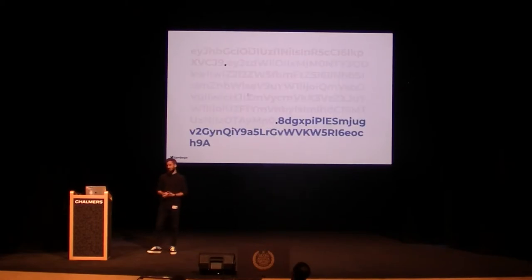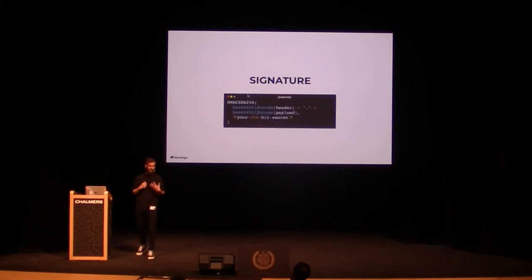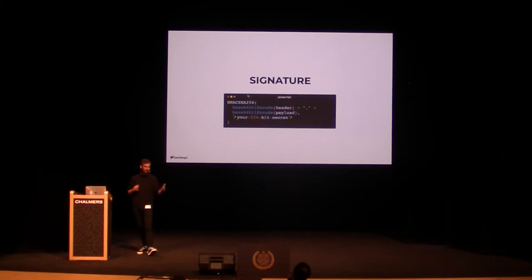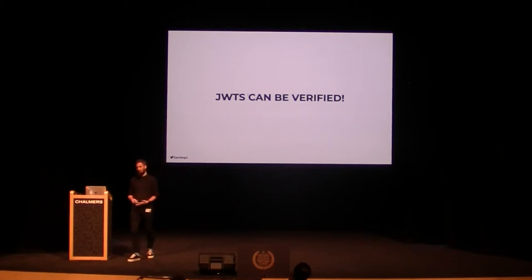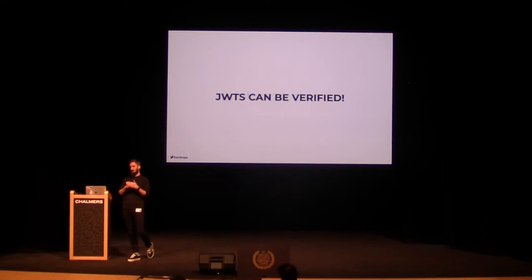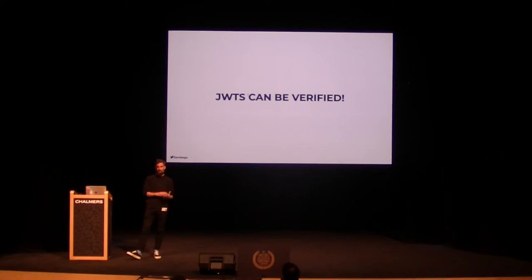The last part is your signature. You take a signing function, pass along the base64 of your header and your payload, and some secret — in the case of this algorithm — and you get a signature. This means that JSON Web Tokens can be verified, since the signature is based upon your header and your payload. Should you change something in your payload, your signature will be different. So if it doesn't match what you're expecting it to be, you know that it's been tampered with and is not valid anymore.